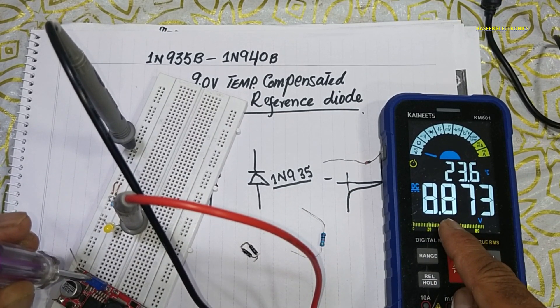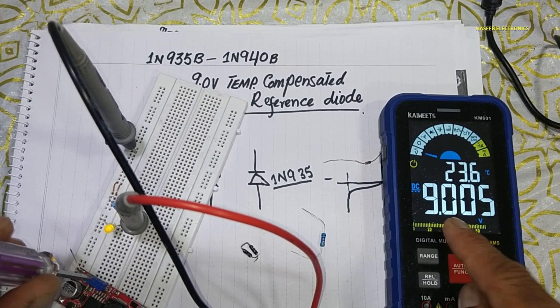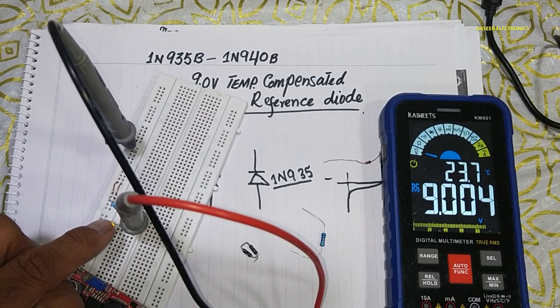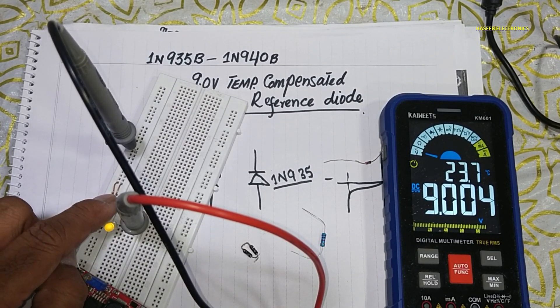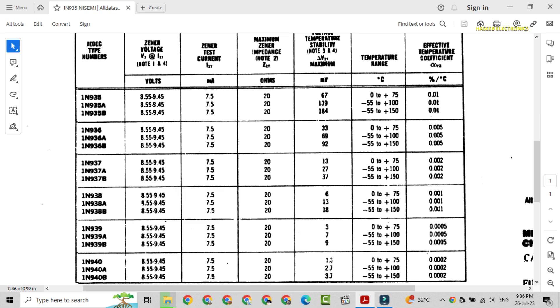When it will obtain its nominal zener reference voltage, it will allow current. It is a 500 milliwatt zener reference. If you don't find 935B, we can select 936, 937, 938, 939, or 940. These are all equivalent.